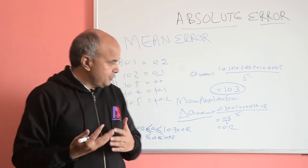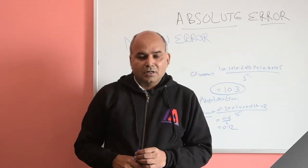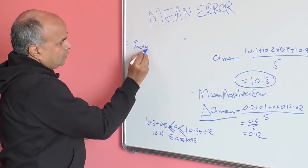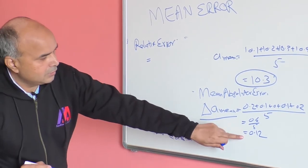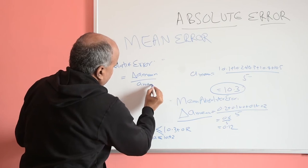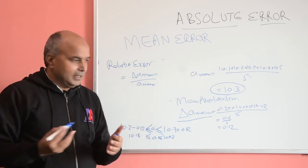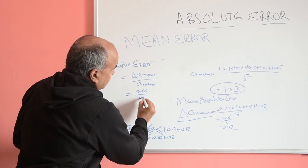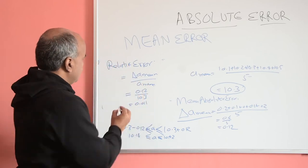The absolute error basically means the mean absolute error. The next term is relative error, which is the ratio of the mean absolute error to the mean value. In this case, relative error = 0.12 / 10.3 = 0.011.